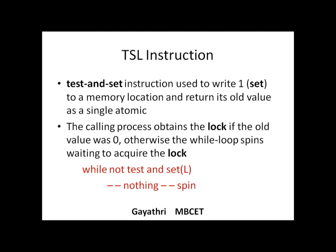If the old value of the lock returned was 0, the thread can acquire it — it has already set it to 1 — and enter the critical region. Otherwise it spins, repeatedly checking until the lock is free. A small pseudocode: while not test-and-set of this lock, spin. If test-and-set succeeds, you can proceed to enter the critical region.